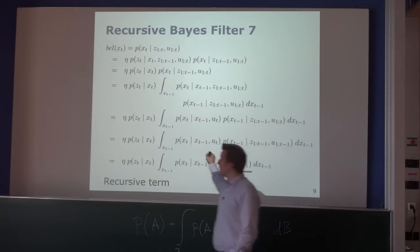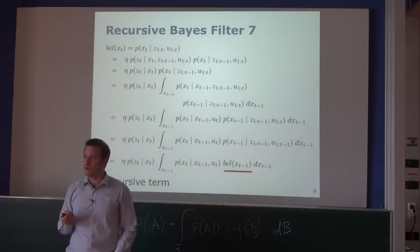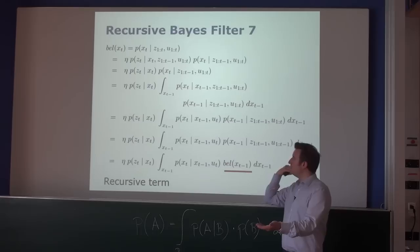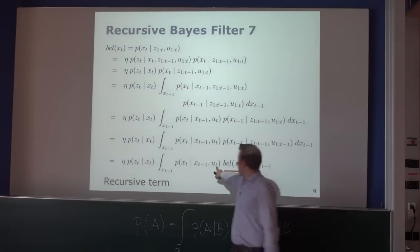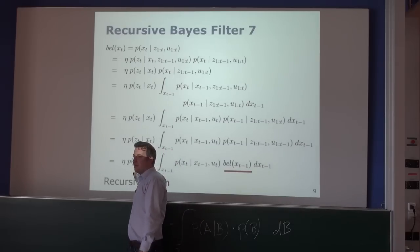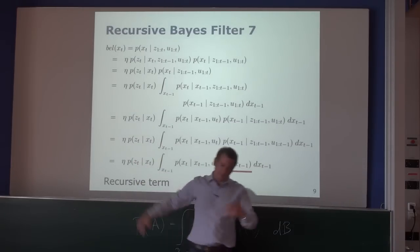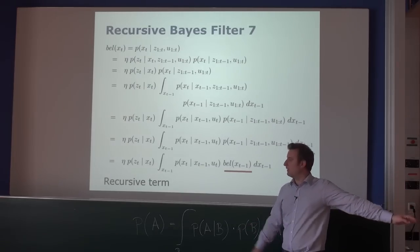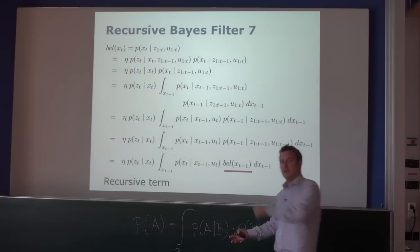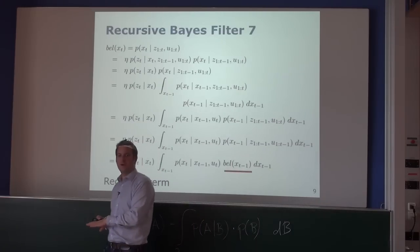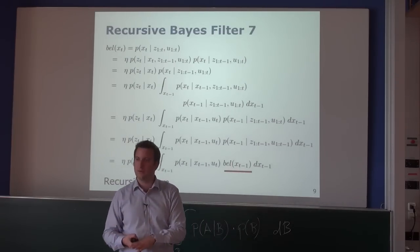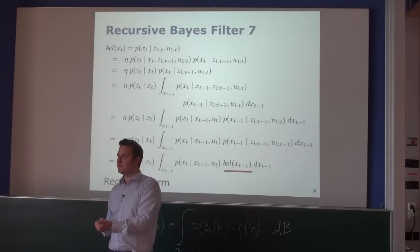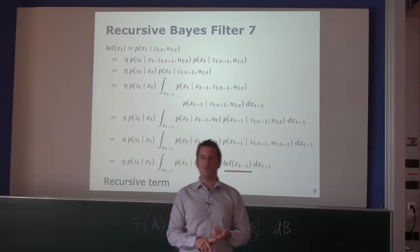The recursive term now looks very similar to the belief at the beginning, with index T replaced by T minus one. We can express it as the belief of the system at the previous time step. This gives us a recursive update scheme that allows us to estimate the state of the system based on the previous state, the current motion command U_T, and the current observation z_T. If we have a probability distribution about the previous state and we execute a motion command and obtain a sensor observation, we can compute the new state. This is exactly what the Bayes filter does.